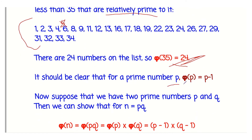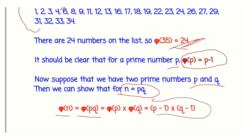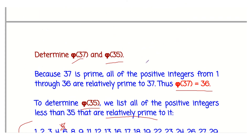For a prime p, φ(p) = p - 1. When n is a product of two large prime numbers P and Q, we calculate N = P × Q. Then φ(N) = (P - 1)(Q - 1). This is the third step in the RSA algorithm, though that is a different topic we will cover separately.